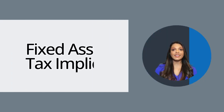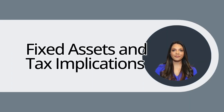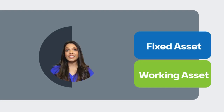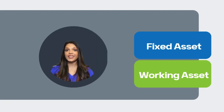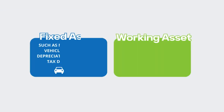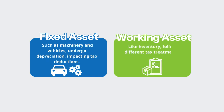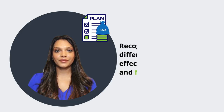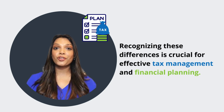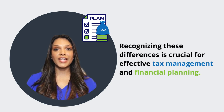Fixed Assets and Tax Implications. Let's start by understanding the distinction between fixed assets and working assets. Fixed assets, such as vehicles and machinery, undergo depreciation, impacting tax deductions. Working assets, like inventory, follow different tax treatments. Recognizing these differences is crucial for effective tax management and financial planning.